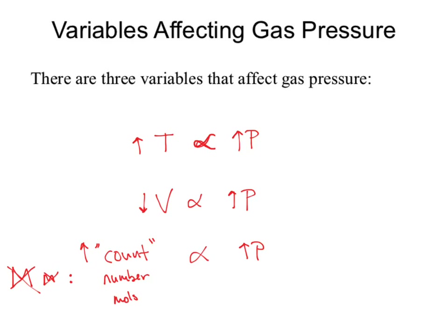We end up using N as our symbol for number of particles. As we increase N, we increase pressure. Do these variables cross-interact? If I increase the number of particles, the volume goes up. If I increase the temperature, the volume also goes up. All these variables are cross-related to each other with a dynamic interaction.